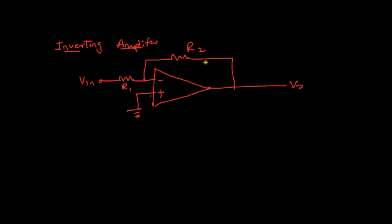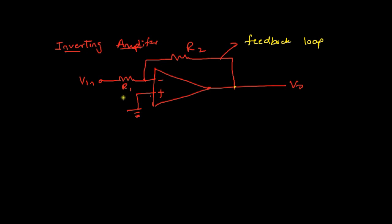As you can see there is a feedback loop. If there is a feedback loop, that is an output connecting to the input, it should use one of those four feedback topologies. To find out which one the inverting amplifier uses, we will understand how the circuit works. As you can see, there is an input resistor R1 and there is R2 which connects both output and input.